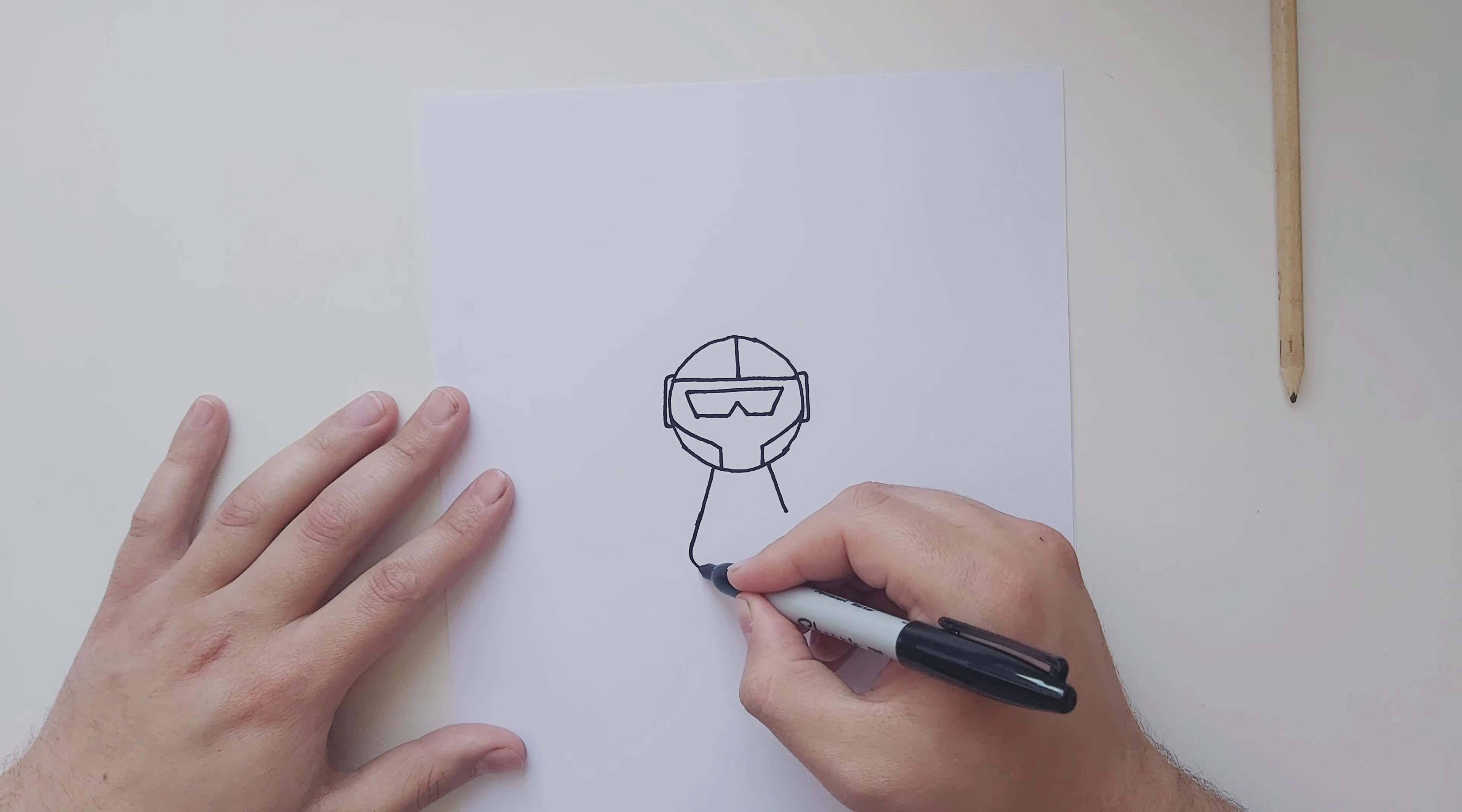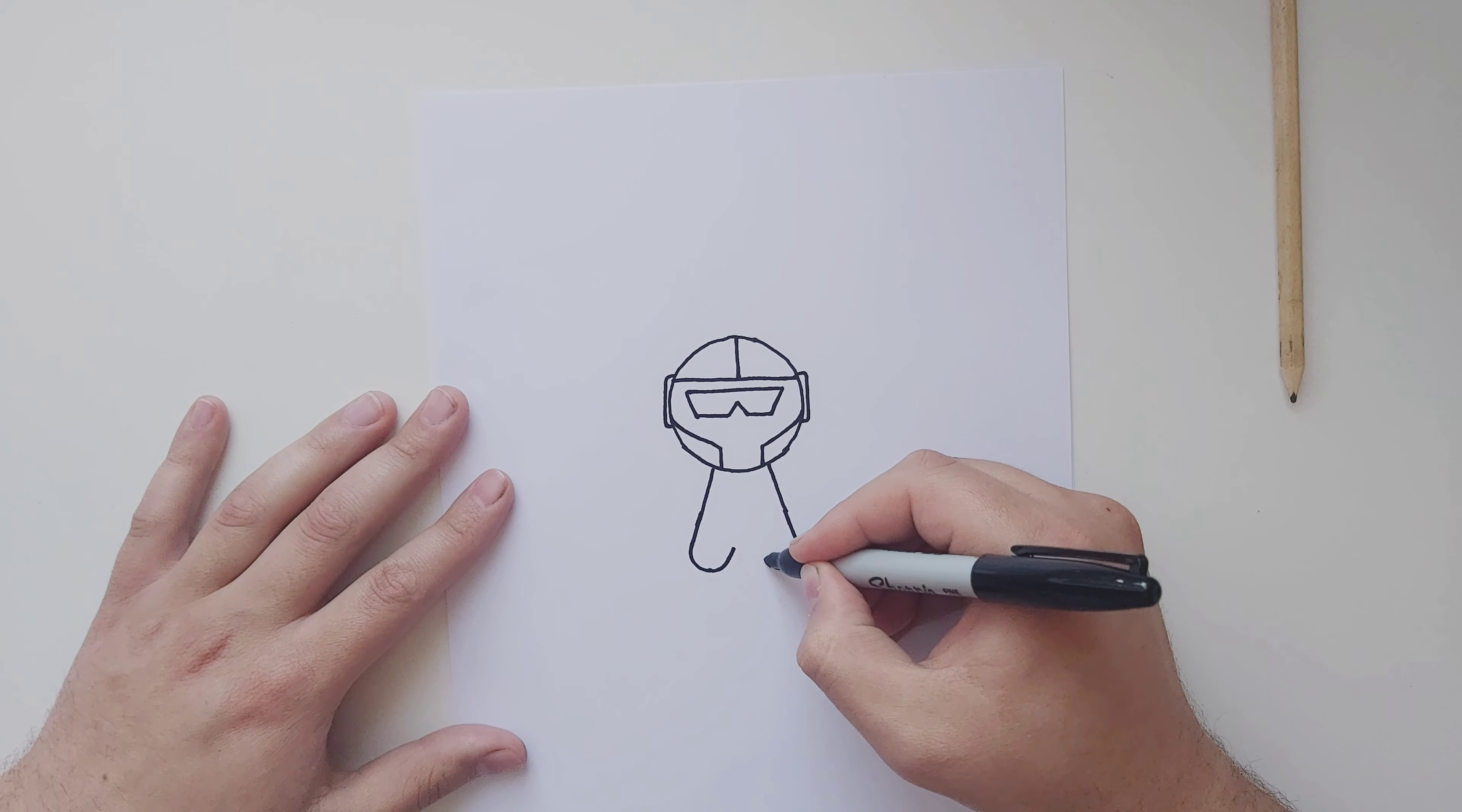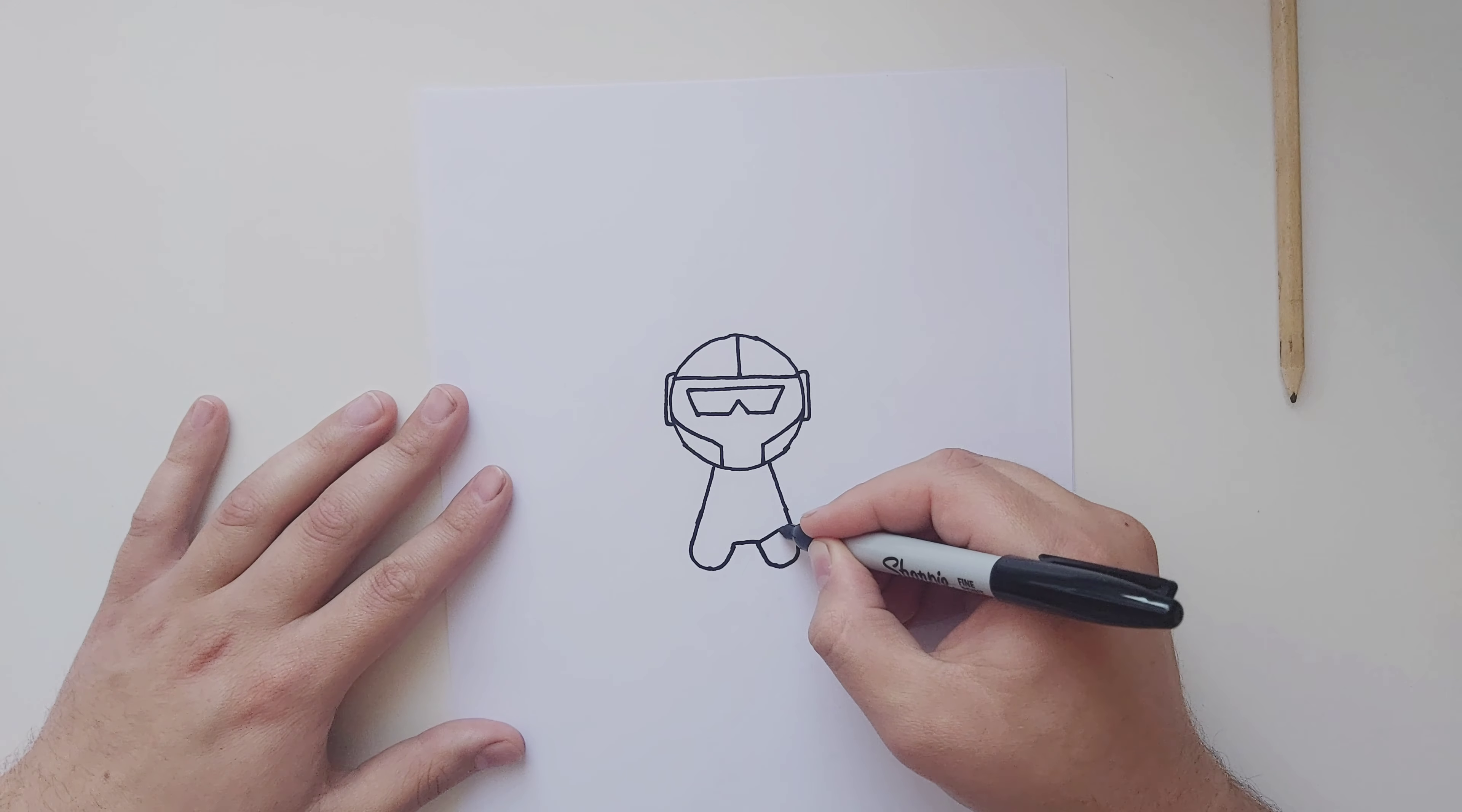When you get to his feet, round it. So one and two, round it, come back up and finish there. Connect these two ends and draw two lines across his legs.